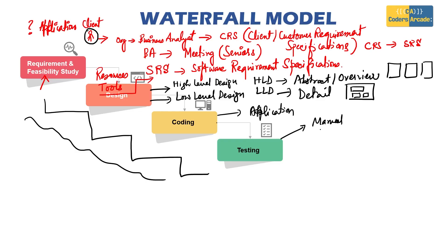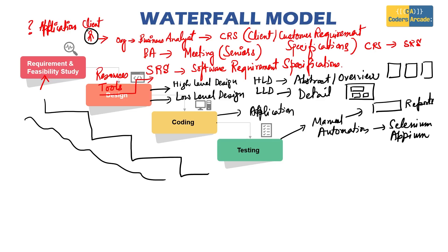Testing is of two types: manual and automation. If it is a web application you can use Selenium; if it is a mobile application you can use Appium — it depends on your application type. Also, it's important to understand that the developer and the tester are like enemies who actually work for the betterment of the organization. Their shared target is to build a bug-free application. They fight all day to make sure the application is bug-free and error-free.